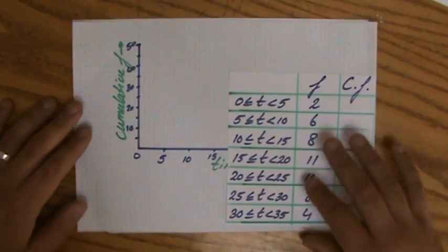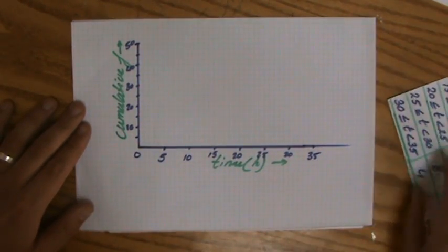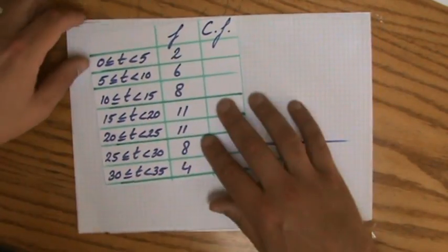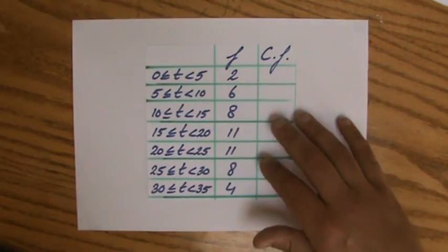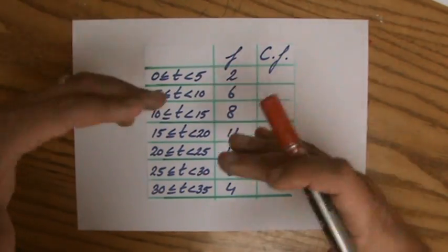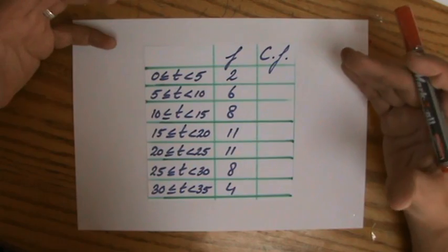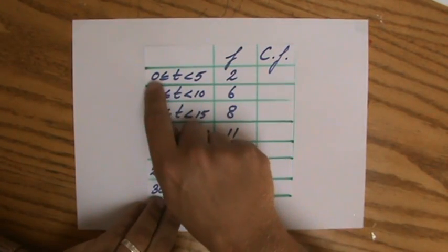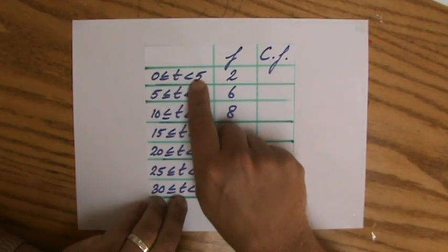I have here a piece of graph paper and a frequency table. Let's start with the frequency table. The question is: the amount of time it takes for students to go home walking. Between zero and five hours, which is quite long by the way, two of my students, and the frequency is two.